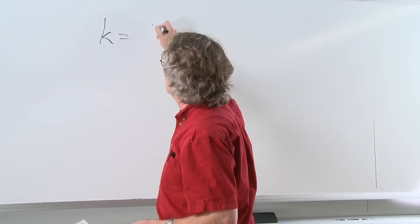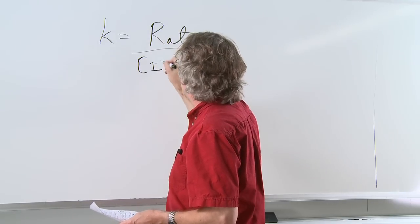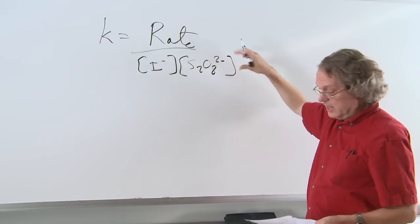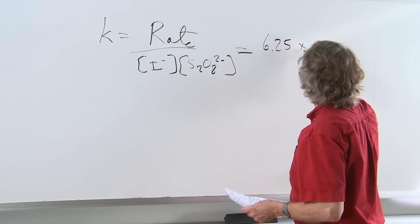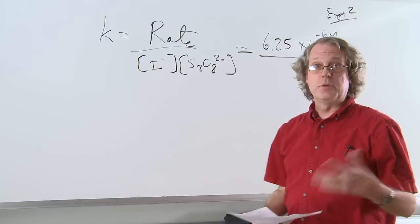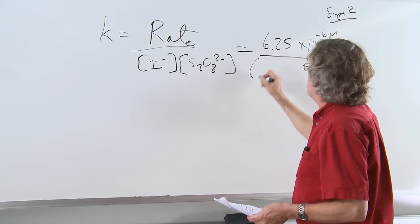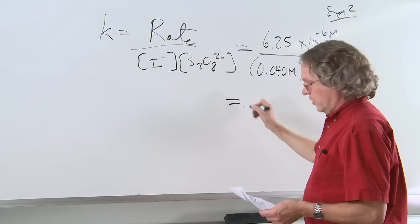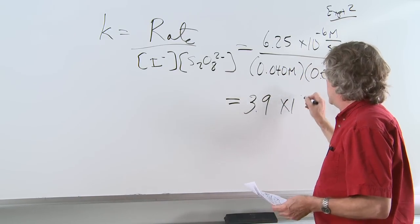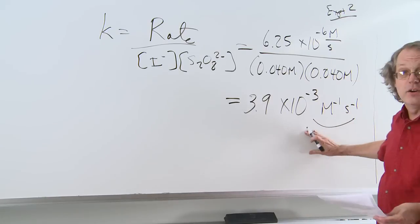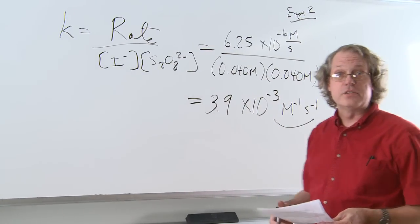The final step involves determining the rate constant itself. We take our rate law expression and rewrite it solving for the rate constant. Putting in the values from experiment two — the initial rate and initial concentrations with correct units — we find that the rate constant at 25 degrees centigrade is 3.9 × 10⁻³ inverse molar inverse seconds. Notice that the rate constant has units, and those units will vary as the rate law varies.